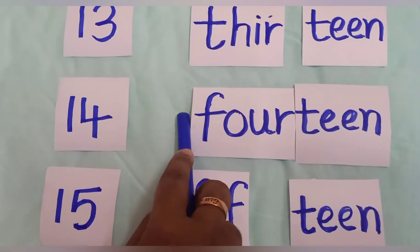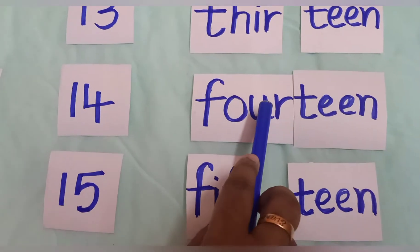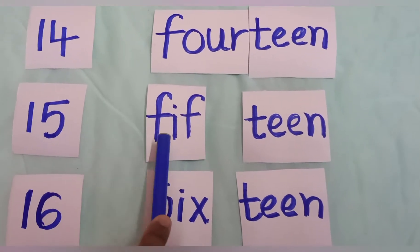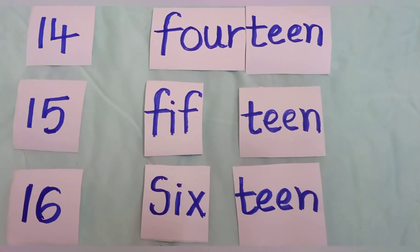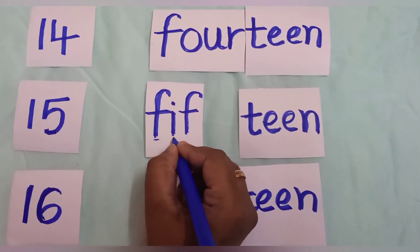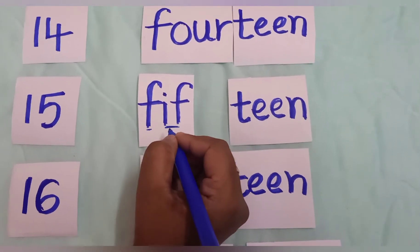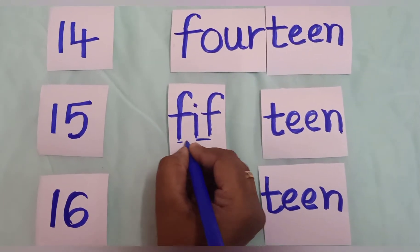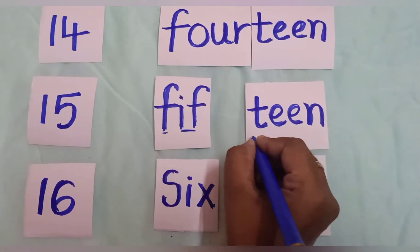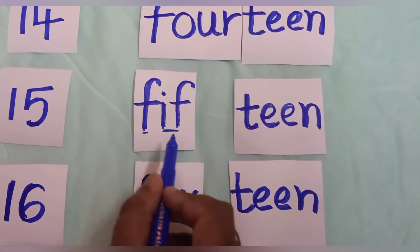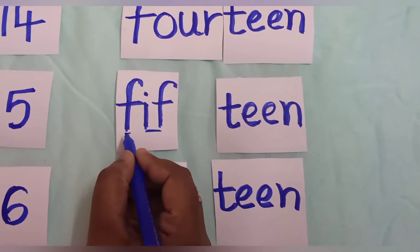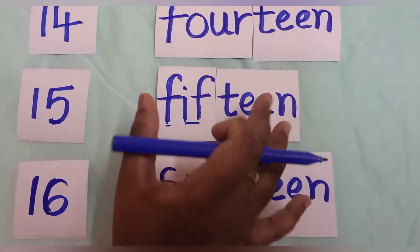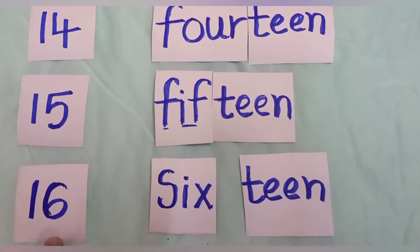Next one is 15, written as 1 and 5. For 15, you write F and then I-F — like the word 'if' — and then add the ending sound teen. So 15 is fifteen. Easy, right?